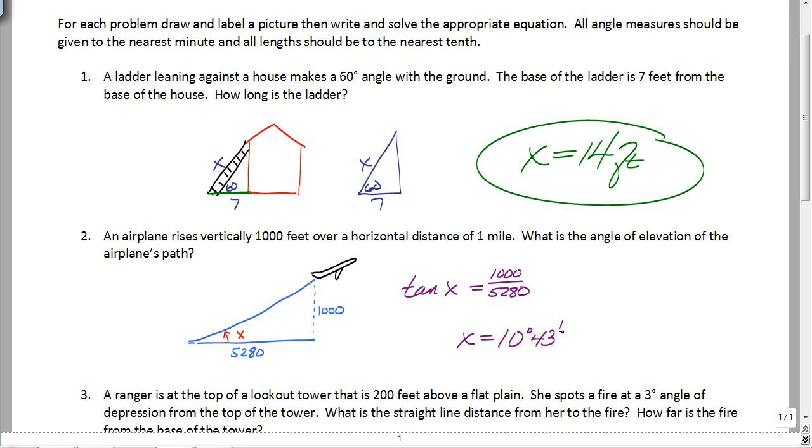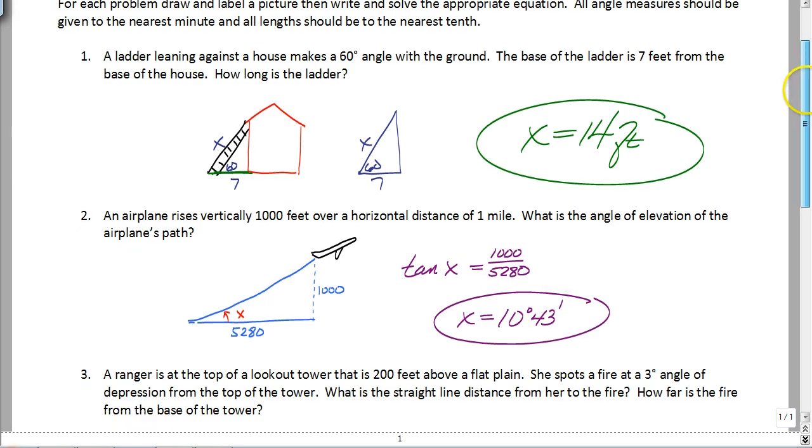So again, remember, angle of elevation, and also once we get to angle of depression, is always based on the original line of sight, a.k.a. the horizontal line.